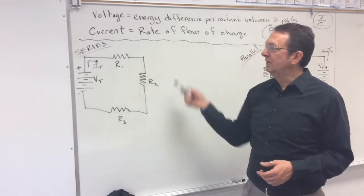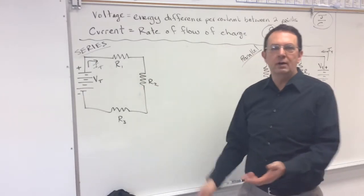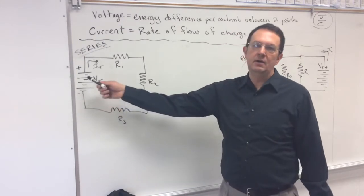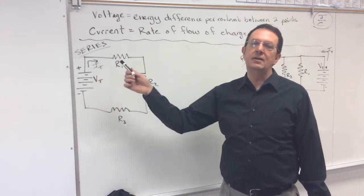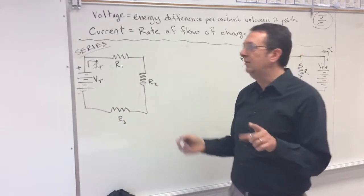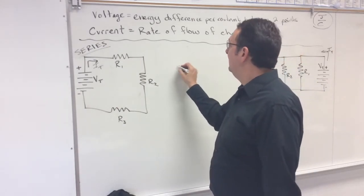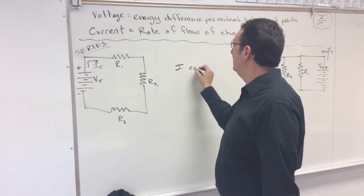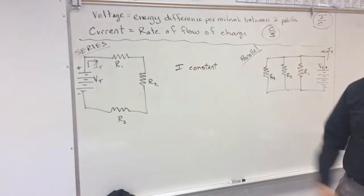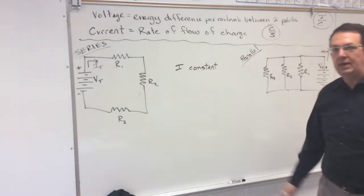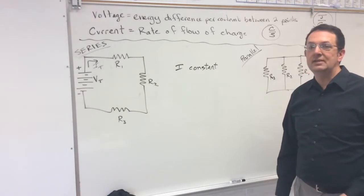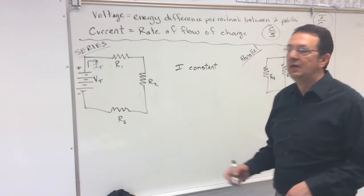Current flows in this direction. The current flowing out of the battery is going to flow back into the battery and through the circuit. So we know, first, that in series the current is constant.